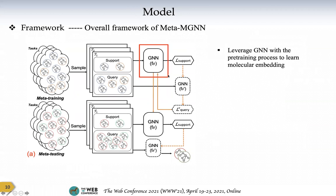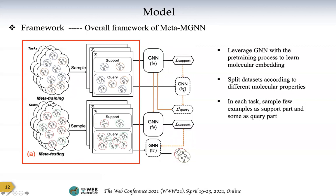Because we utilize the graph neural network to learn each molecule's embeddings and do the prediction, and to improve the performance, we want to maximize the information we can obtain from existing datasets. We also utilize a pre-training strategy. Our framework is similar to MAML, and we train our model according to tasks. We split the datasets according to molecular properties, meaning different tasks represent different properties. The tasks in the testing part are different from the tasks in the training part.